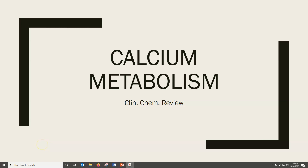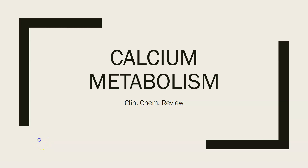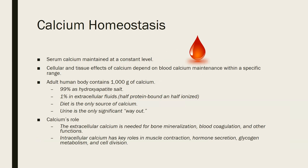This is a clinical review video on calcium metabolism. Calcium homeostasis aims to maintain a constant serum calcium level — specifically the blood level, not the bone level — because the cellular and tissue effects of calcium depend on blood calcium remaining within that specific normal range.